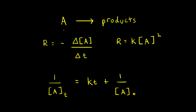Let's say we have a hypothetical reaction where reactant A turns into products, and the reaction is second order with respect to A. We can write the rate of the reaction as equal to the rate constant K times the concentration of A to the second power, since this is a second order reaction.